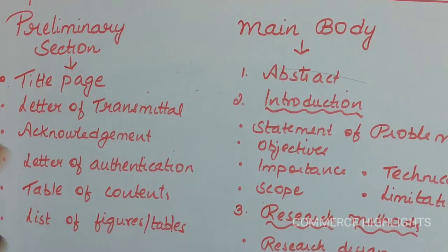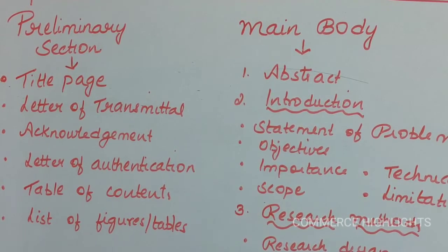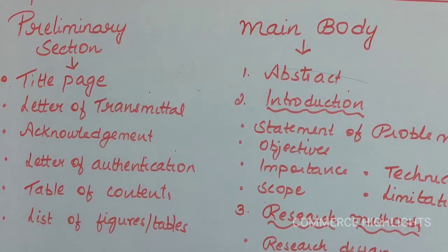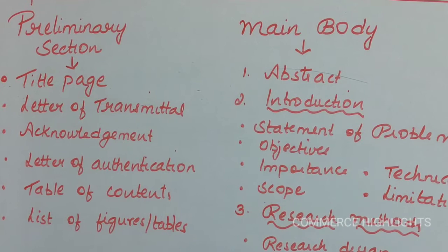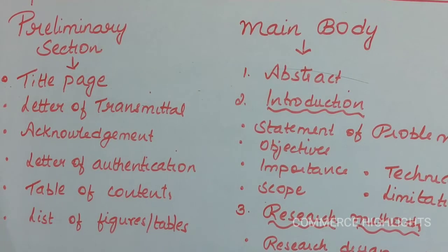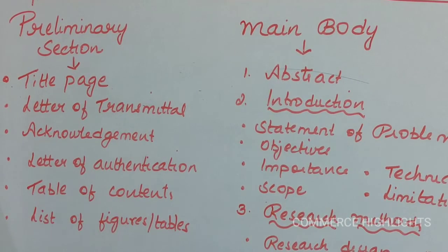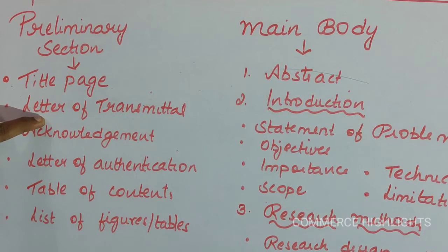The second thing to be included in the title page is the name of the researcher, and the third thing is the name of the person to whom the research report is being prepared. The second element in the preliminary section is a letter of transmittal, which should contain a brief background of your research — that is, the resume of the scope and background of the research worker.